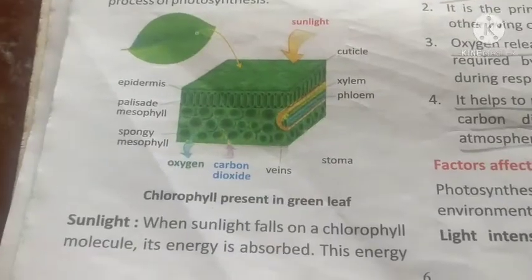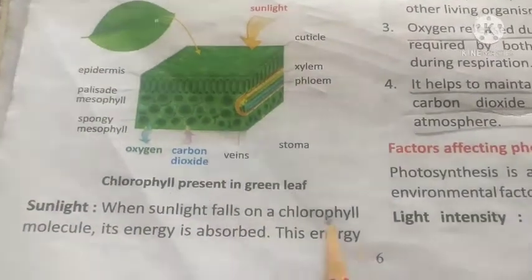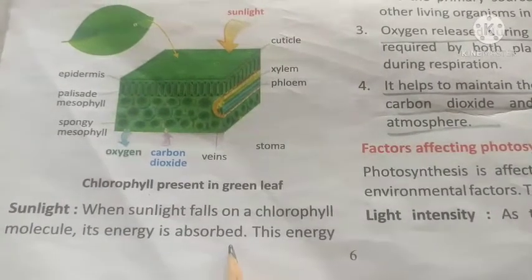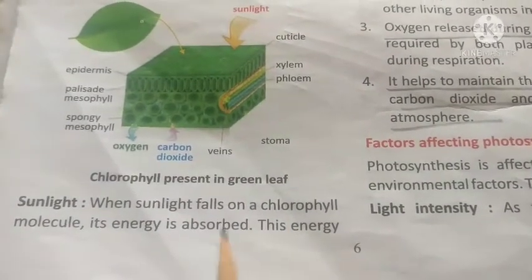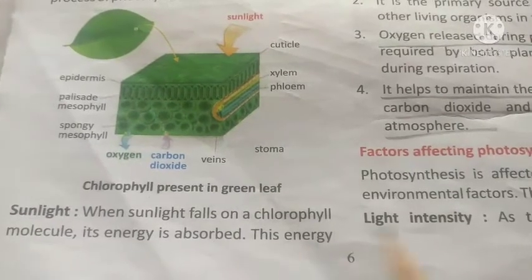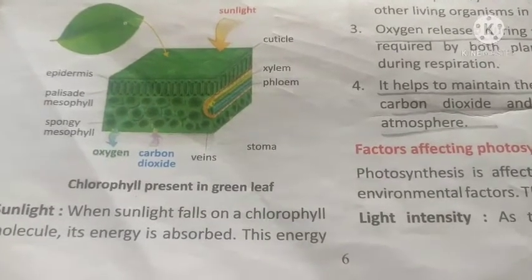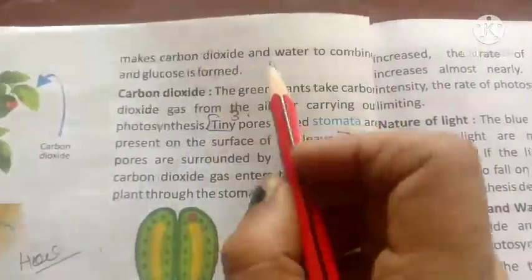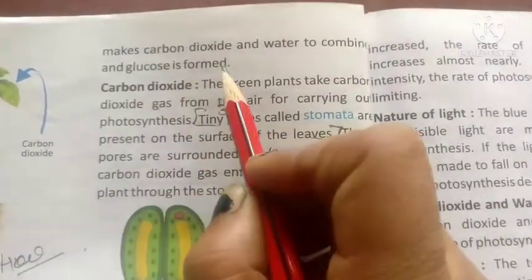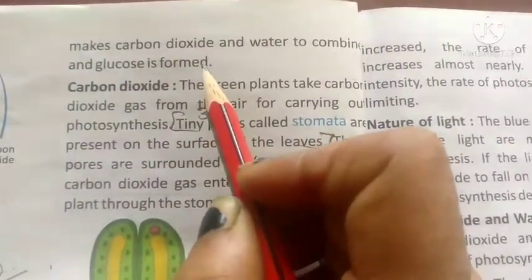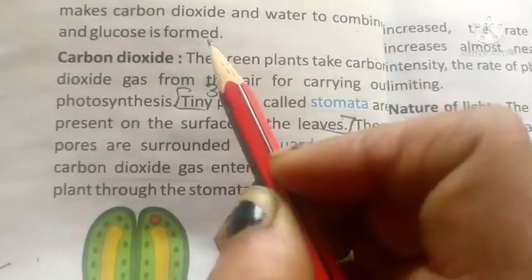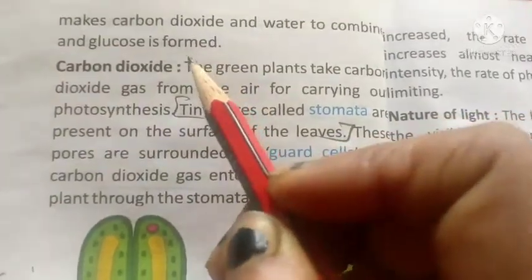Next condition is sunlight. When sunlight falls on chlorophyll molecules, its energy is absorbed. This energy makes carbon dioxide and water combine, and glucose is formed. So in the process, carbon dioxide and water are mixed to produce glucose.